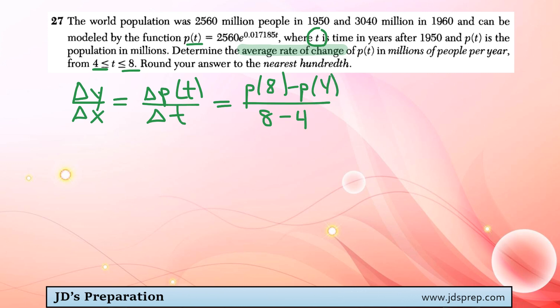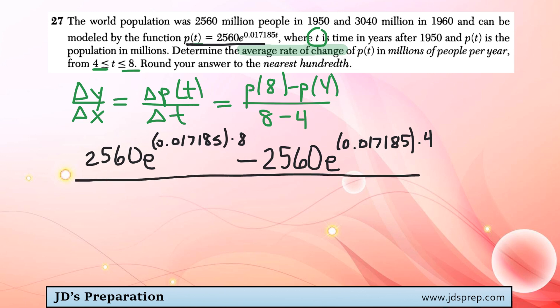So to find p of 8, we take that function and we replace t with 8, and then we're going to subtract p of 4. Then this whole thing would be divided by 8 minus 4.